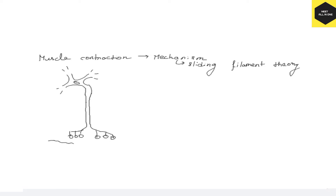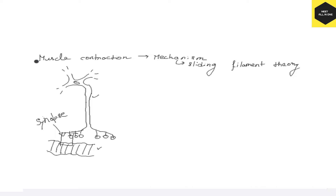And here we have a muscle fiber. Now, imagine zooming into this portion — this is a synapse between the neuron and the muscle. When acetylcholine is released from the synaptic bulbs, it will go into the plasma membrane of this muscle.